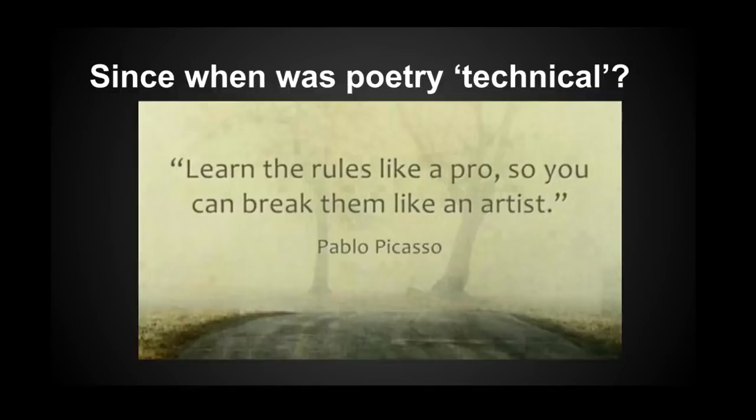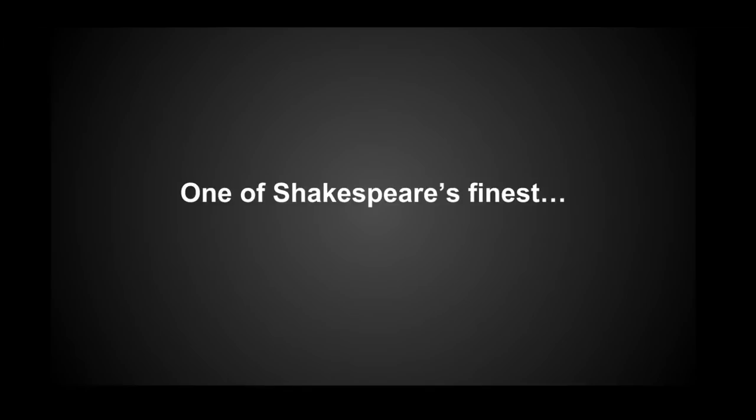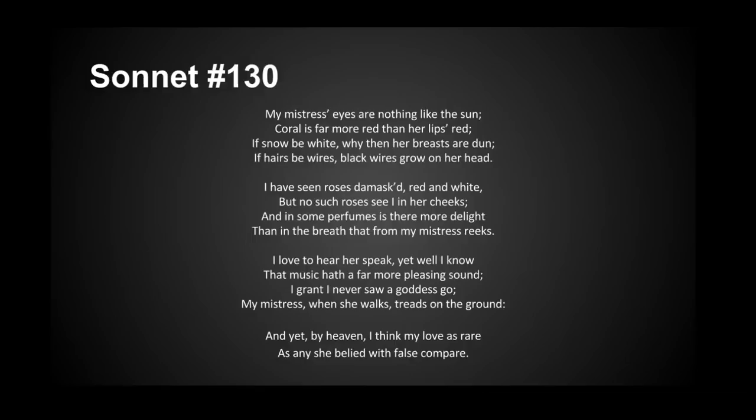As the end goal of this tutorial is the Shakespearean sonnet, let's take a look at an example of what we're gunning for. We are about to read one of the original Shakespearean sonnets written by the bard himself in 1609. Sonnet number 130. My mistress' eyes are nothing like the sun. Coral is far more red than her lips' red. If snow be white, why then her breasts are dun. If hairs be wires, black wires grow on her head.